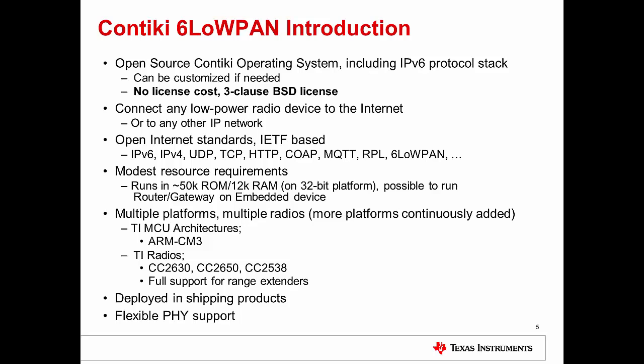A very big advantage from the implementation perspective is that it has a very small footprint — it only consumes 50K of flash and 12K of RAM on a 32-bit platform. It is possible to run a router or gateway on an embedded device. From the platform perspective, although it supports multiple platforms, it definitely supports the Cortex-M3 core from ARM. The radios supported in the Contiki offering are the CC26XX family and CC13XX family — the 2.4 GHz and sub-1 GHz families — and also the CC2538, which is the Cortex-M3 ZigBee SoC.